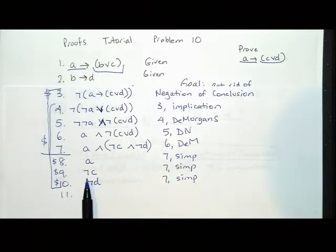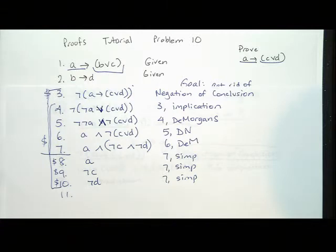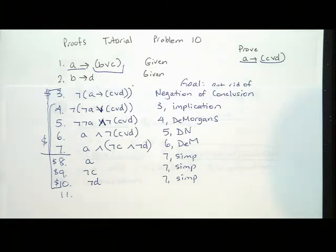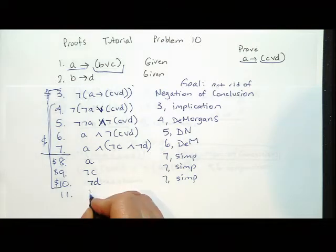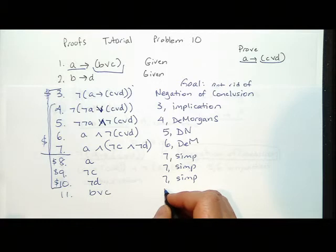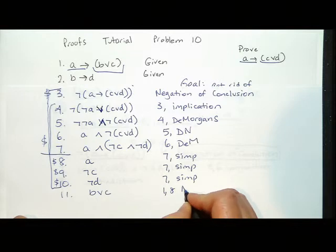One thing to watch out for: you cannot combine nine and one together directly. At least one person had A implies B as a line in their proof — that's logically true, but none of our rules actually give it to us. I recommend combining lines one and eight. If I combine one and eight, I can get B or C via modus ponens.